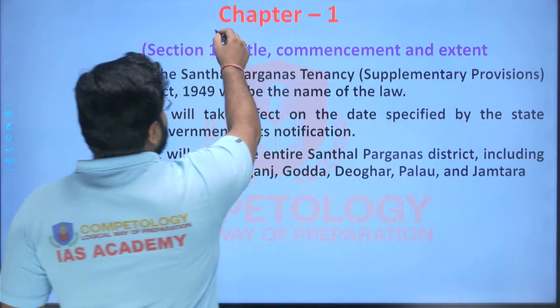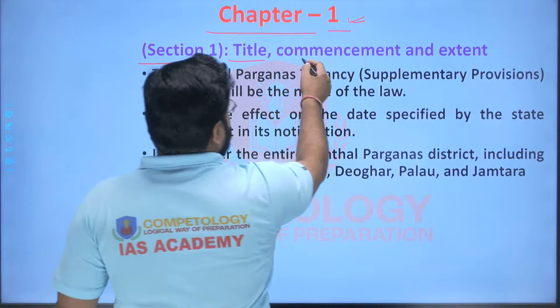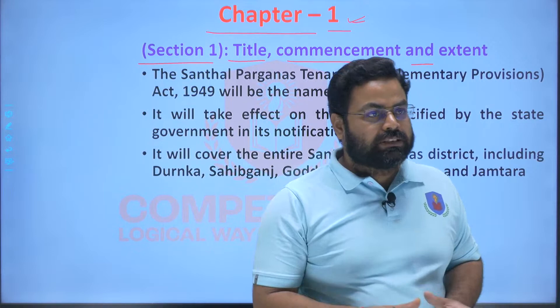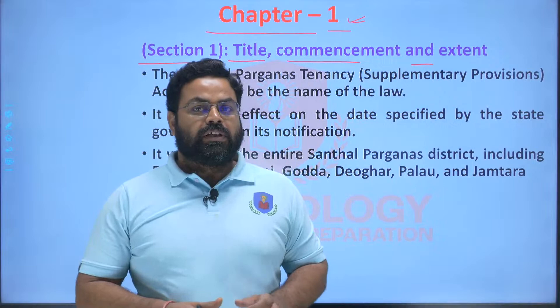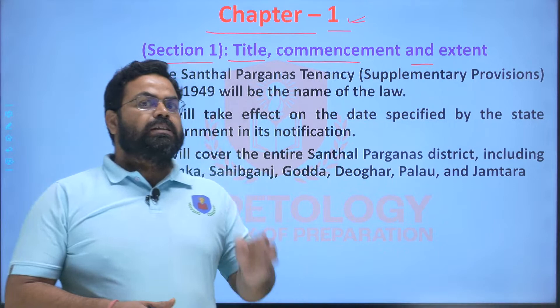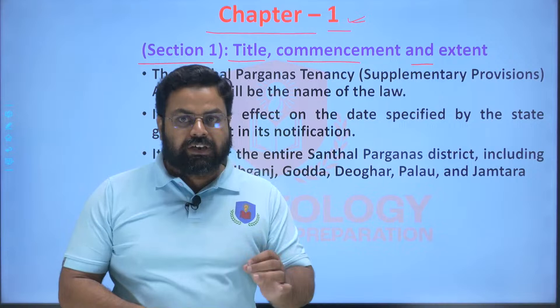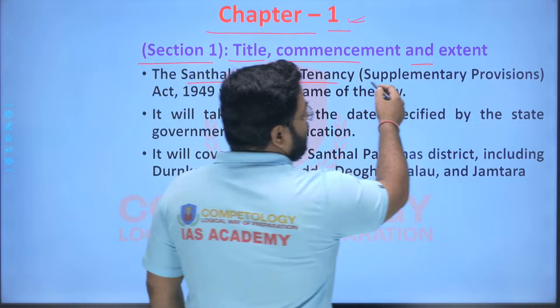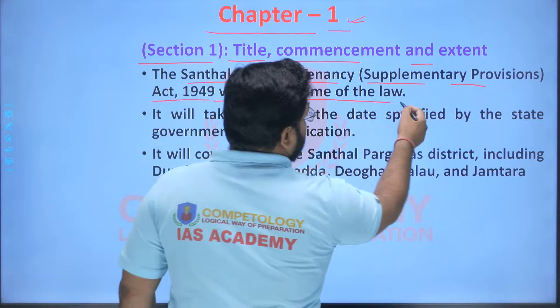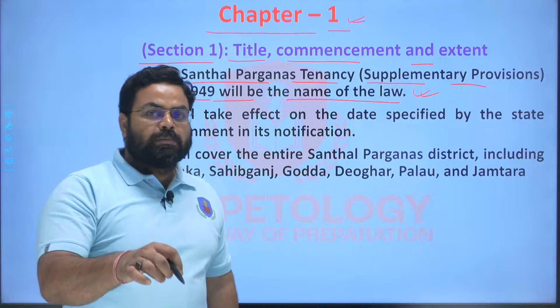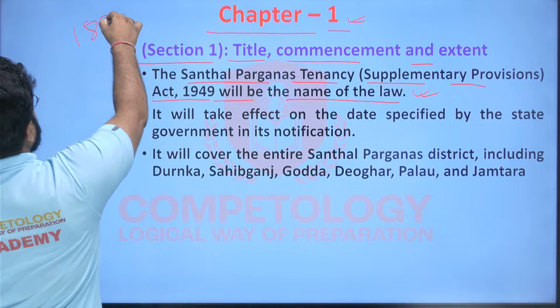Chapter one, section one covers title, commencement and extent. The first section of this act relates to the name — that is the title of the act — thereafter commencement, the date when it will be implemented, as well as the extent — in which areas it will be effective. The name of this law is the Santhal Pargana Tenancy Supplementary Provisions Act of 1949, because this act was a supplement and an extension of the act that was passed in 1872.